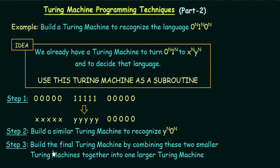Step 3 is to build the final Turing machine by combining these two smaller Turing machines together into one larger Turing machine. The first Turing machine handles 0^n 1^n and converts it; the second Turing machine recognizes y^n 0^n. Glue the two Turing machines together so that they will recognize all three parts — 0^n 1^n 0^n — together.